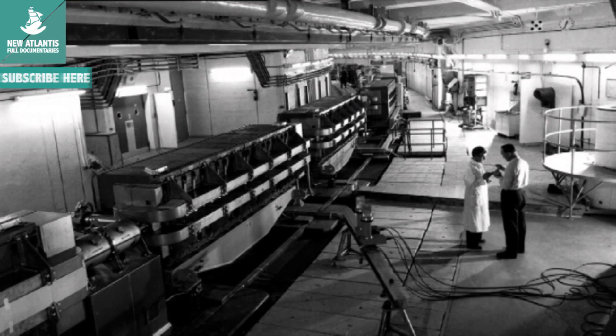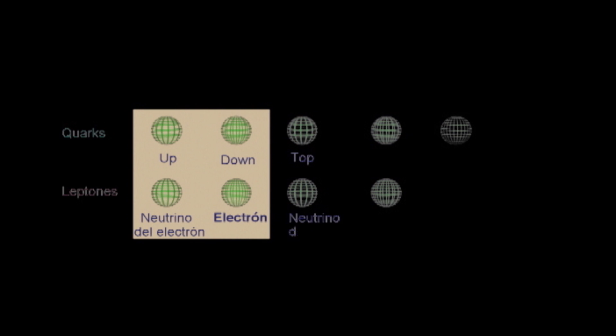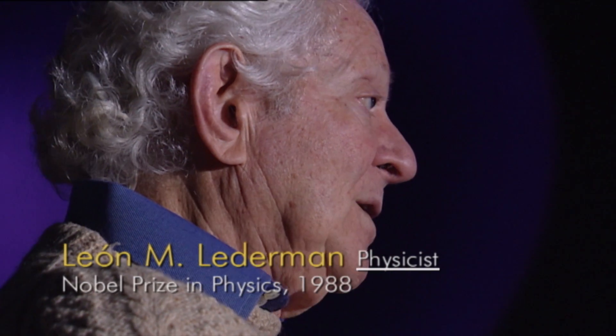Antimatter is now created in minuscule quantities in particle accelerators. In the early 1960s, so many particles had been discovered that physicists suspected they had to be made up of other, more elemental particles. It was then that Murray Gell-Mann proposed the existence of quarks and, with the aid of other scientists, defined the standard model. The total standard model picture of matter is six quarks and six leptons, and their behavior is determined by forces. The forces themselves are carried by particles: there's the strong force holding quarks together, the electromagnetic force which binds electrons to nuclei to make atoms, and the weak force which creates radioactivity.